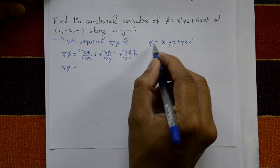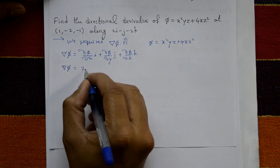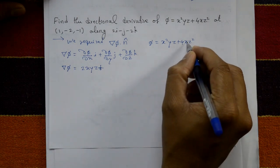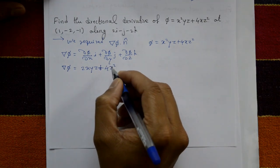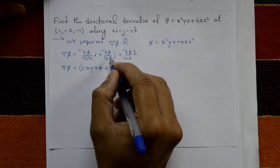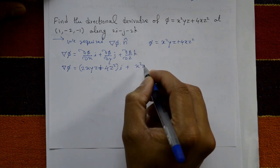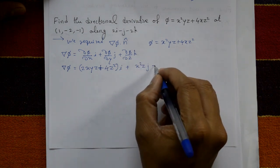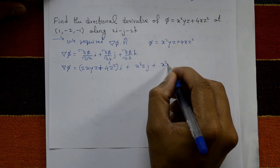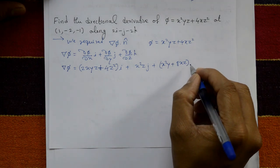Now del phi: differentiating phi with respect to x partially gives 2xyz plus 4z squared, into i. Differentiating phi with respect to y gives x squared z, into j. Differentiating phi with respect to z gives x squared y plus 8xz, into k.